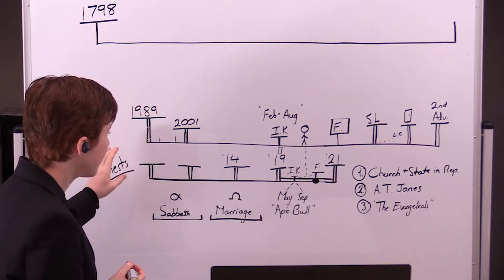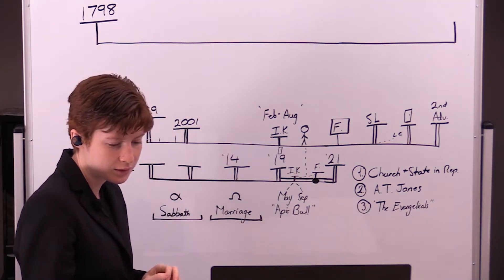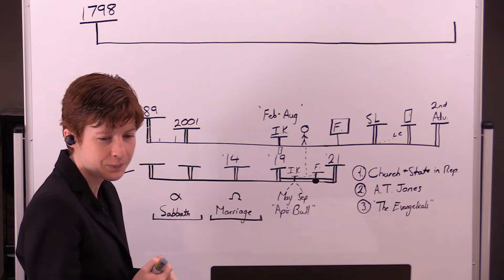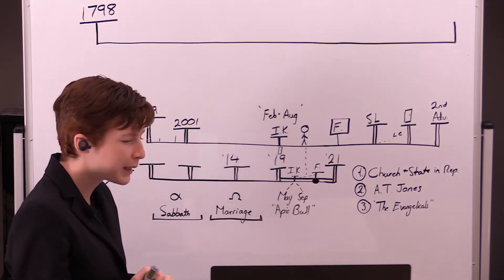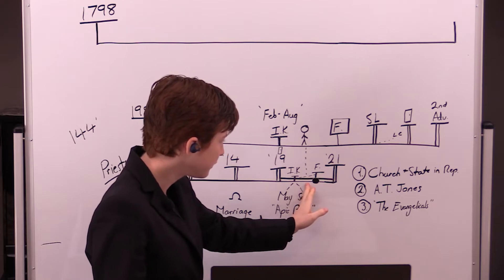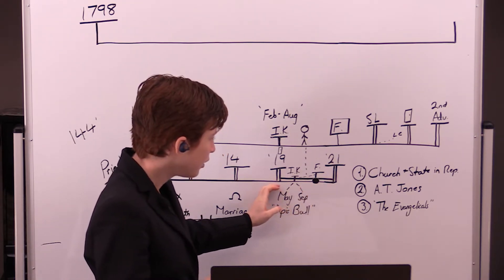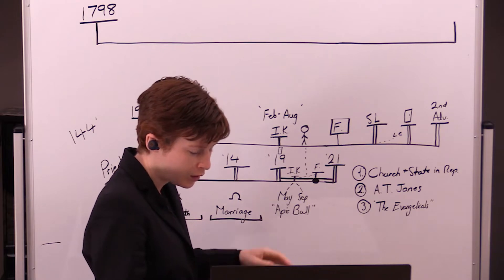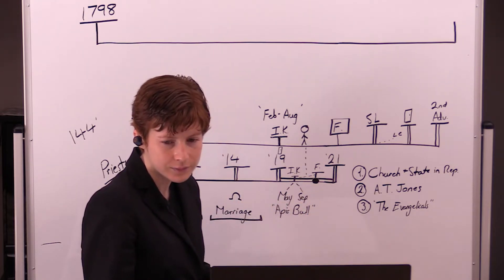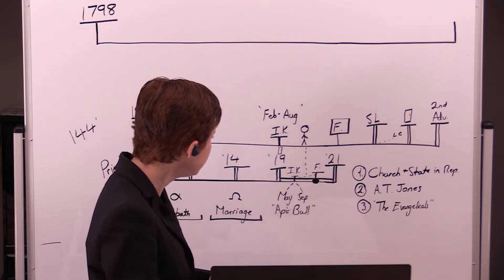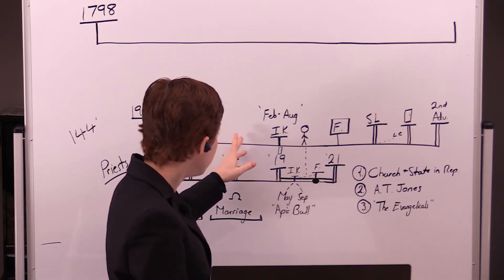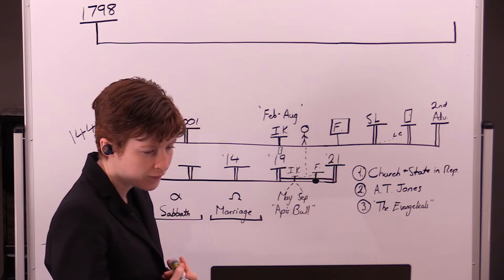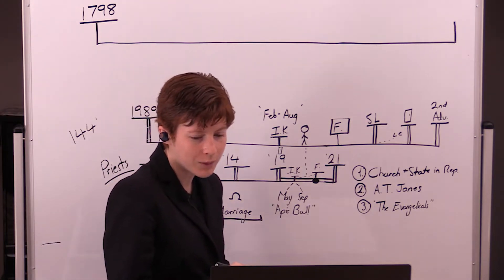We constructed the light of 144,000. In the line of the priests, we placed ourselves here between Raffia and Panium, 2019 and 2021, between the increase of knowledge and the formalization of the early reign for the 144,000.